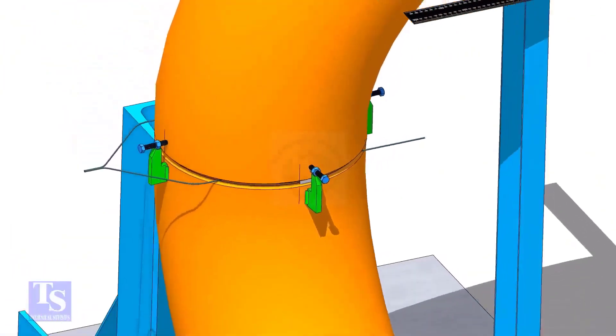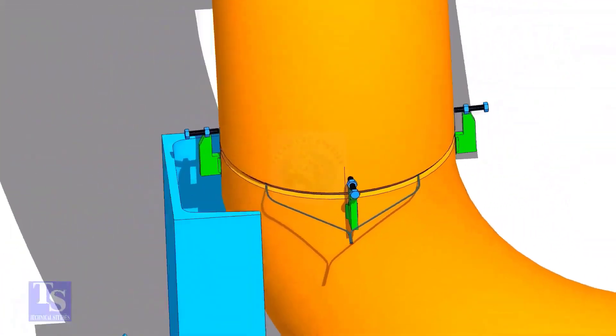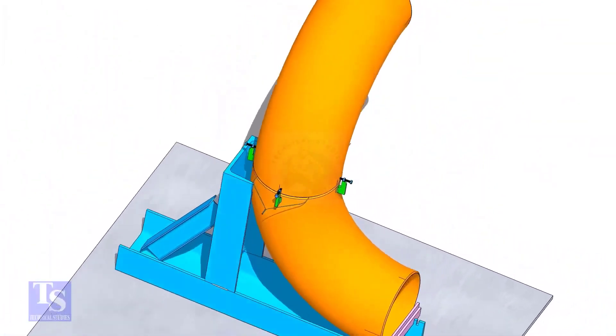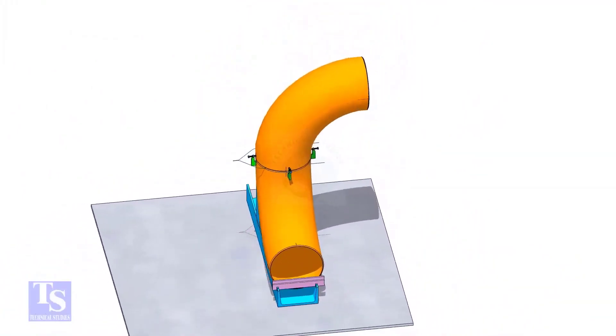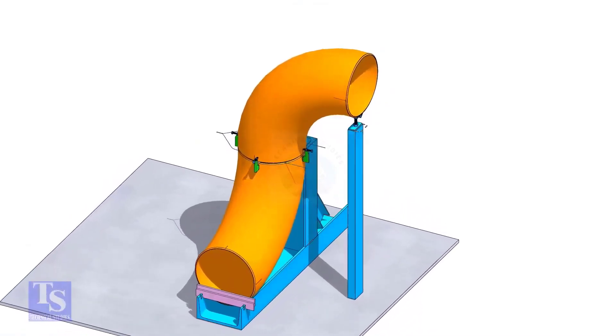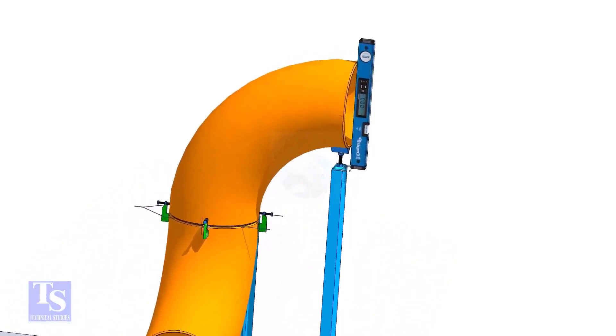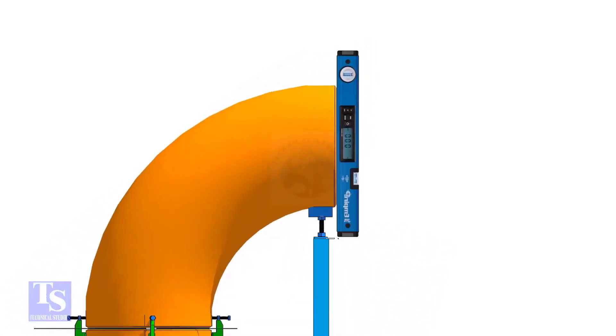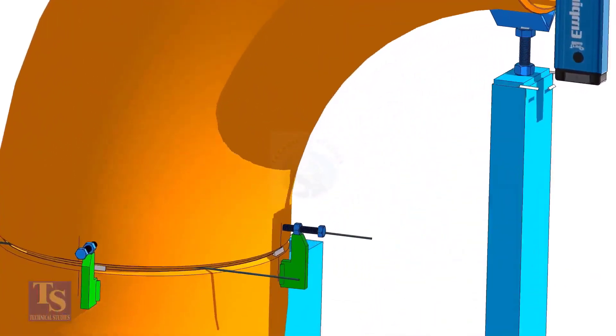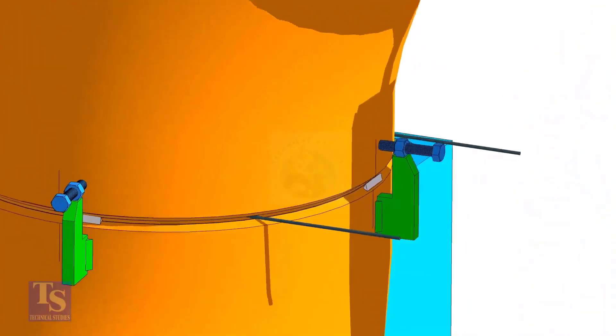Tack weld on the near and the far sides of the joint as shown. Check the verticality of the elbow face. Tack weld on this side and the back side of the elbow.